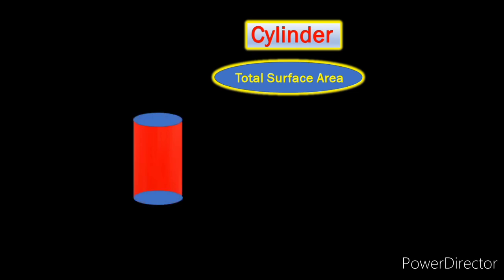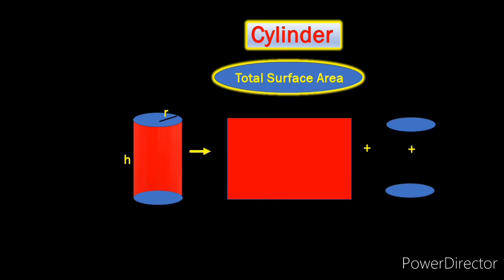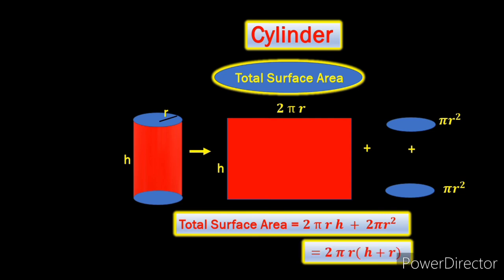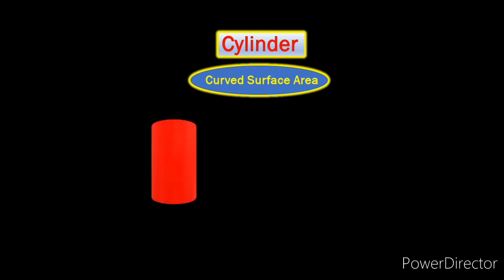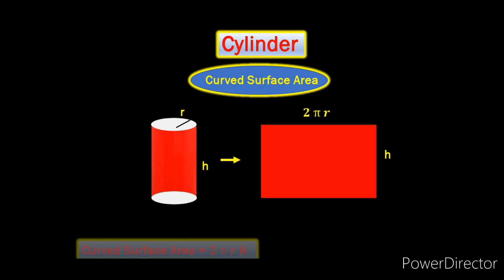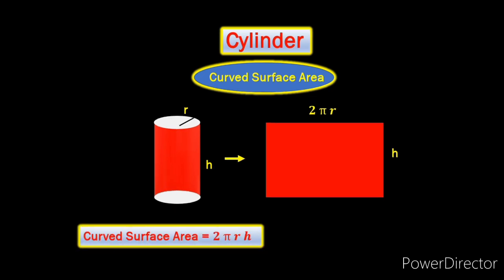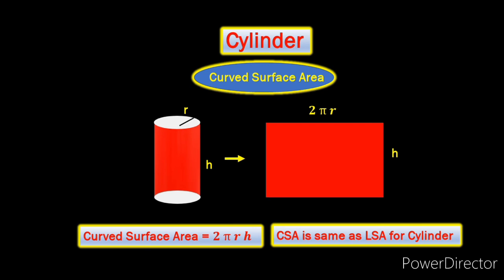Now here comes the cylinder. For its total surface area, we need to add the areas of all the surfaces — that is this curved face over here and also the two flat circles. The area of this curved face is 2πRH and the area of each of the circles is πR². And that's how we get the total surface area as 2πR(H + R). Now because a cylinder has a curved surface, it will surely have a curved surface area. For that, we only need to consider this curved face — we need to exclude the two flat circles. The area of this curved face is 2πRH, and that's why the curved surface area is simply 2πRH. This curved surface area is the same as the lateral surface area of the cylinder, because it's lying on the side — so the lateral surface area of a cylinder is the same as its curved surface area.